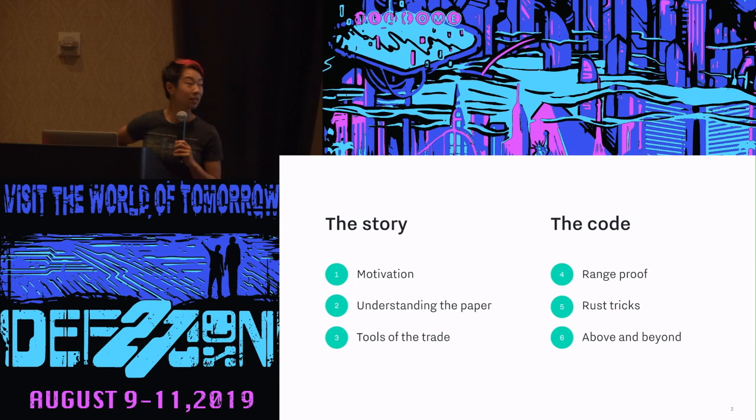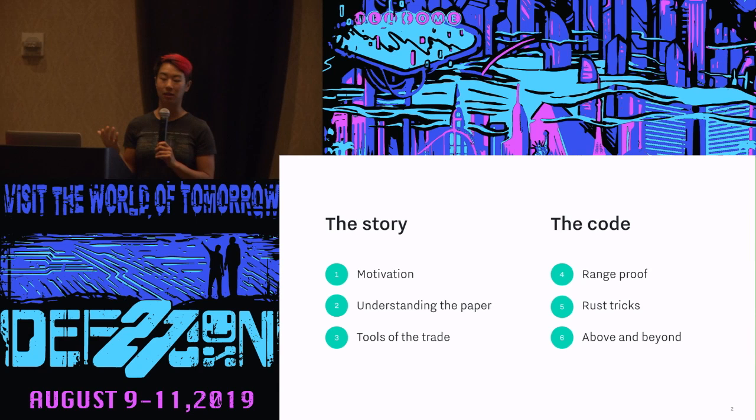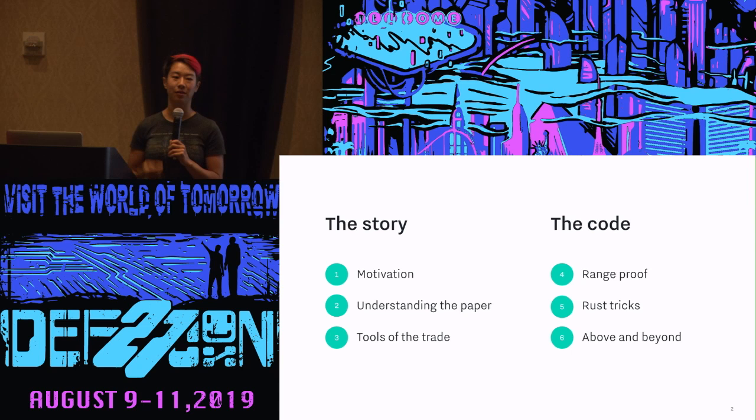The outline is: first I'll tell you a little bit about the story — how we came to decide on implementing Bulletproofs and what tools we used. Then I'll look into the code. I'll show you a code snippet from our range proof code. I'll tell you about what we were able to do because we implemented it in Rust. And I'll talk about what we built above and beyond using that protocol.